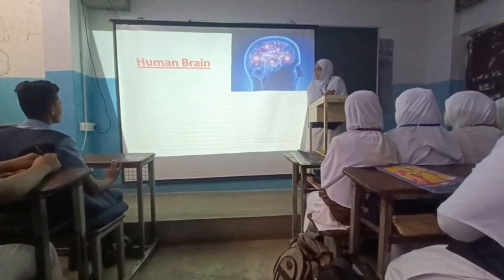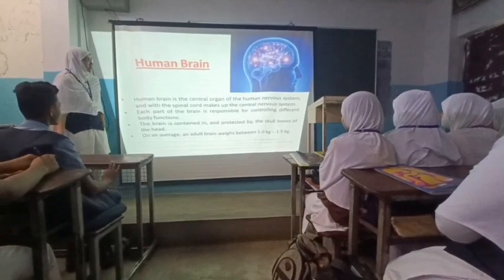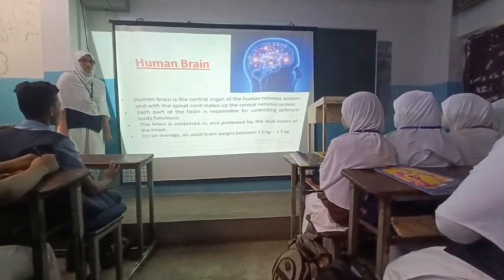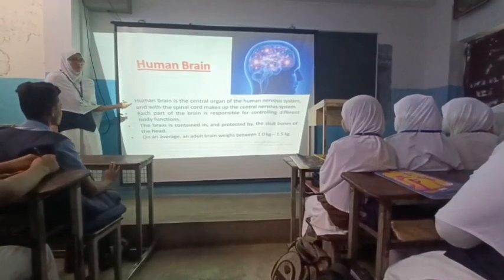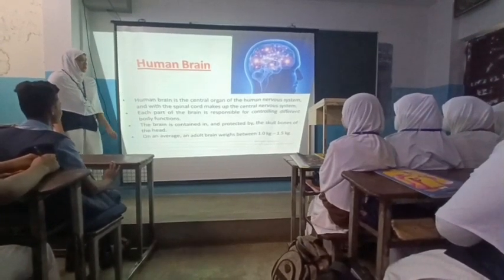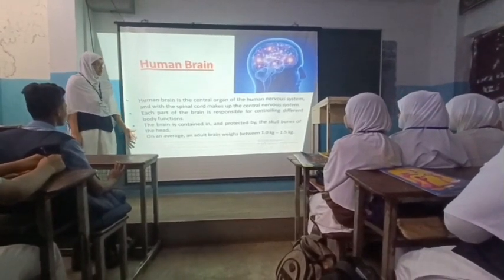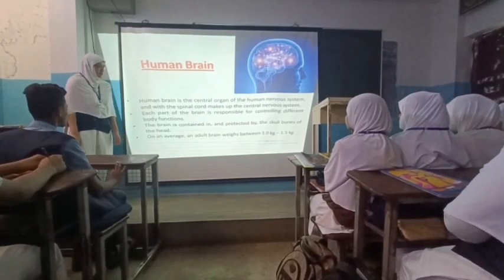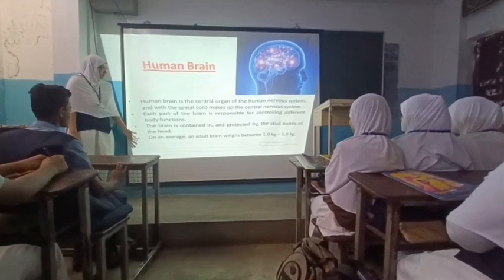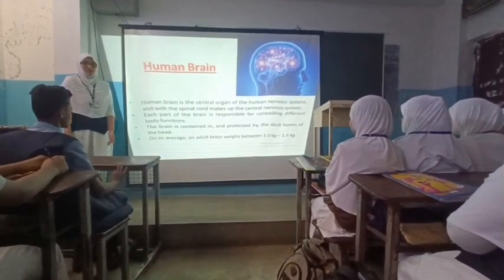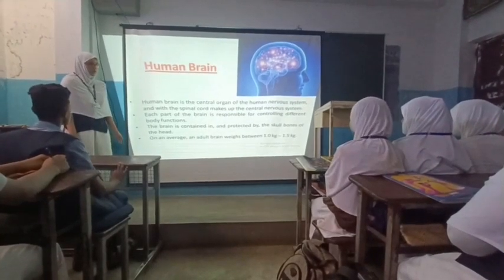Next we will move to the human brain. The human brain is the central organ of the human nervous system, and together with the spinal cord it makes up the central nervous system. Each part of the brain is responsible for controlling different body functions. The brain is contained in and protected by the skull bones of the head. On average, an adult brain weighs between 1.0 kg to 1.5 kg.